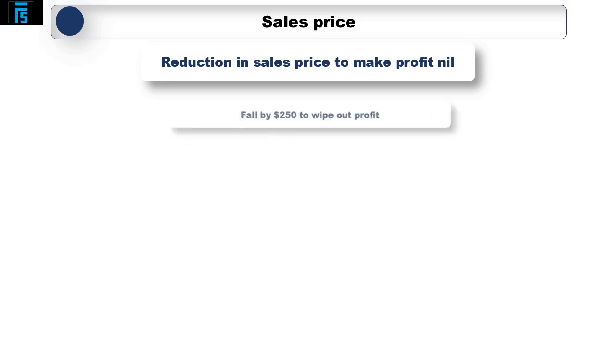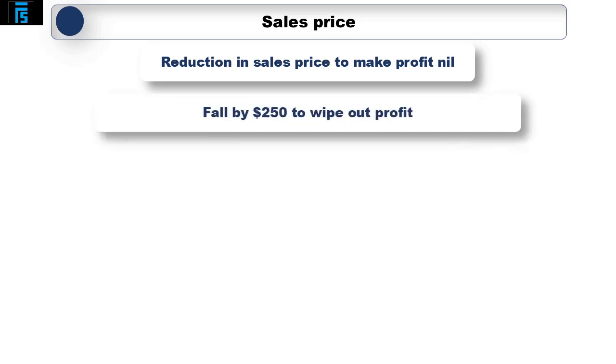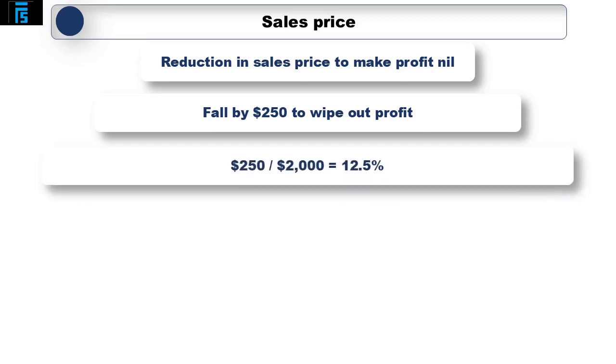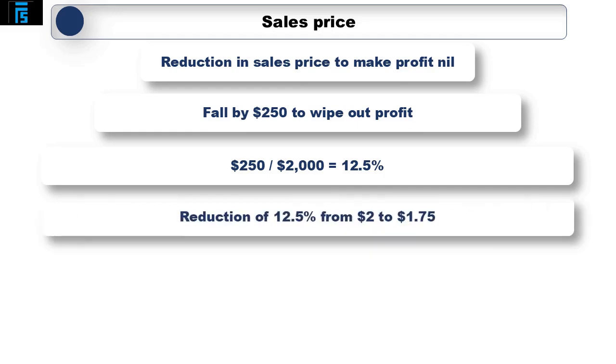Sales revenue would have to fall by $250, everything else being equal, to wipe out the profit of $250 and reduce it to zero. This is a reduction of $250 divided by $2,000 is 12.5%, or a reduction down from $2 to $1.75.